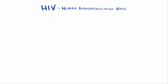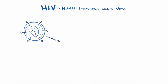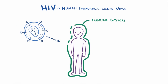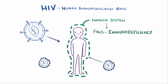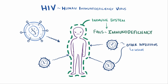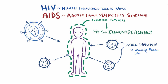HIV, or human immunodeficiency virus, is a virus that targets cells in the immune system. Over time the immune system begins to fail, which is called immunodeficiency, and this increases the risk of infections and tumors that a healthy immune system would usually be able to fend off. These complications are referred to as AIDS, or acquired immunodeficiency syndrome.